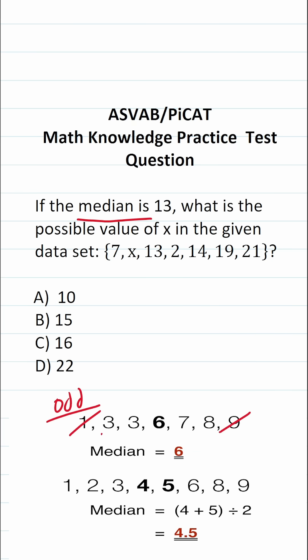So in this case, we'll just cross our numbers off one at each end until we get our median of six.